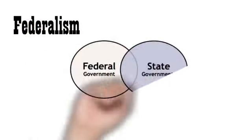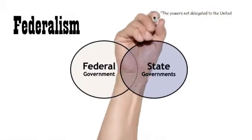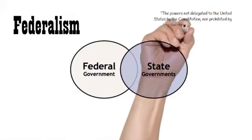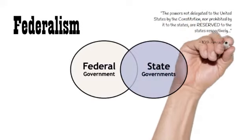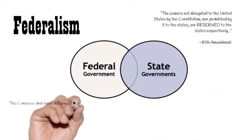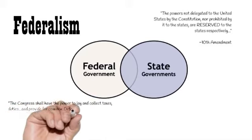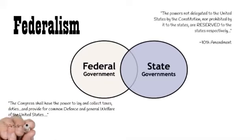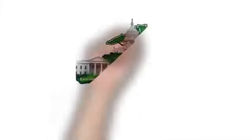Federalism is a division of power between the state and federal government. The Tenth Amendment grants power to the states by saying anything not listed in the Constitution is reserved for the powers of the state — reserve powers. Delegated or enumerated powers are those powers that are actually listed in the Constitution — what Congress can do. Anything not in there, they're not allowed to do it.